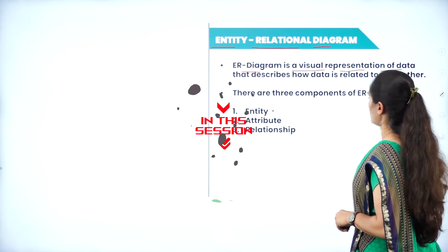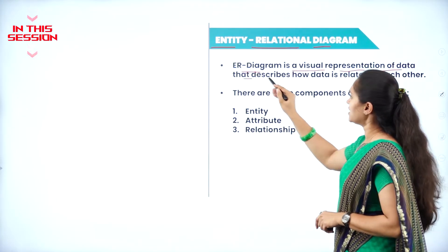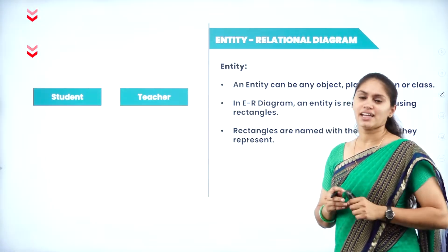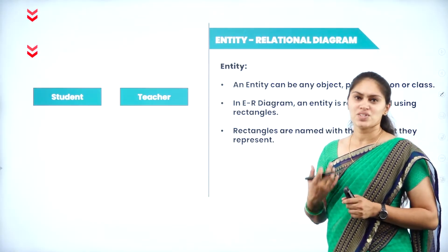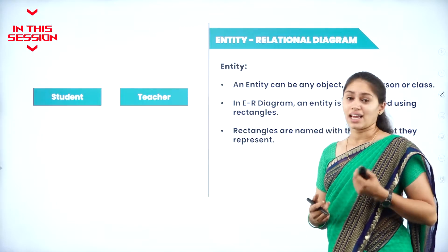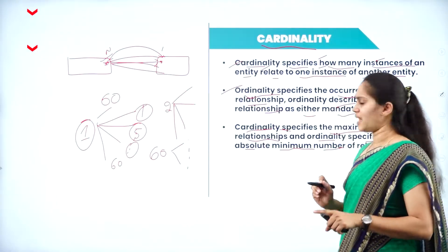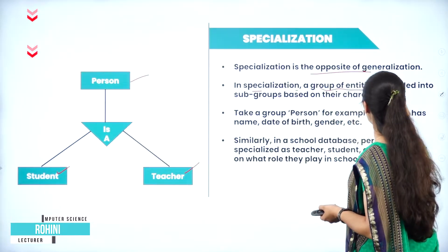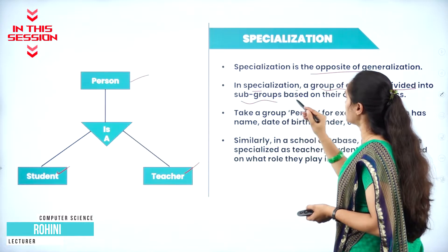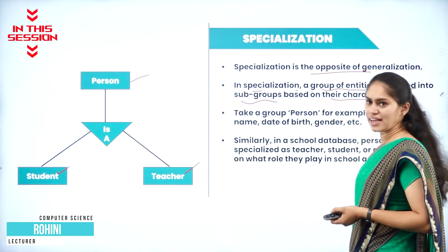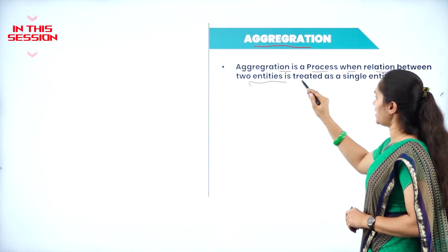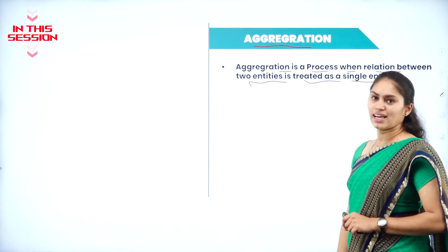An ER diagram is a visual representation of data that describes how data is related to each other. An entity can be anything — it can be an object, name, or a place. In ordinality, we check for the minimum number of relationships. In specialization, a group of entities are divided into subgroups based on their characteristics. Aggregation is a process when the relation between two entities is treated as a single entity.